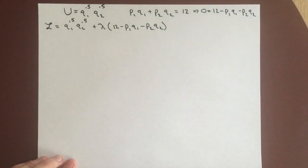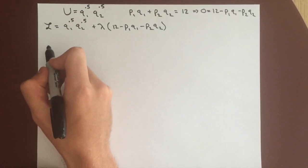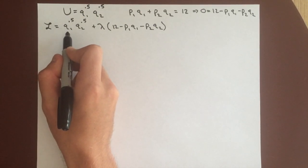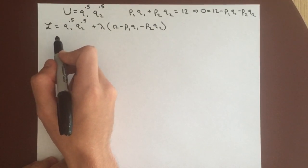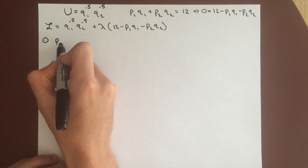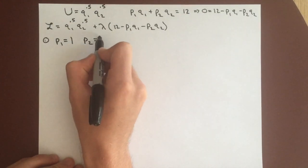So we're going to try and find the demand curve for good number 1 here. And so we're going to want to try and find what quantity of good 1 we'll have at different prices of good 1. So let's start out just with p1 equal to 1 and p2 equal to 1.